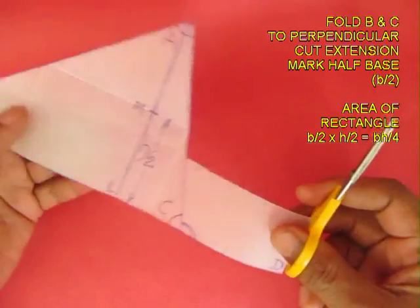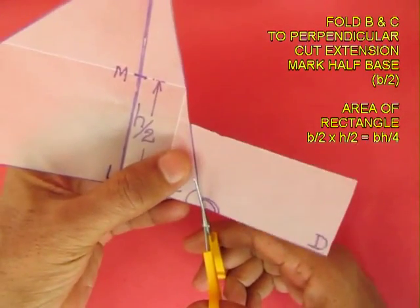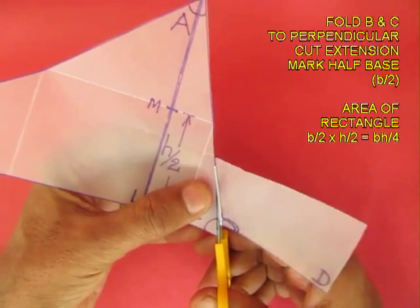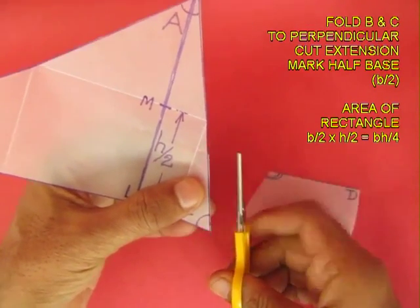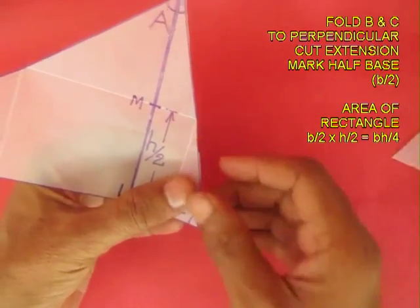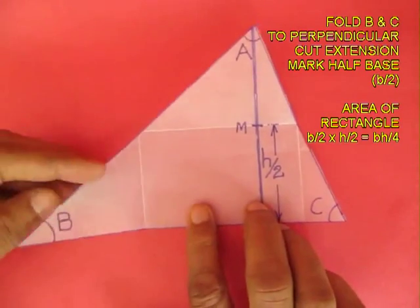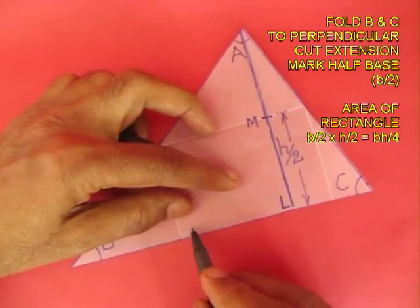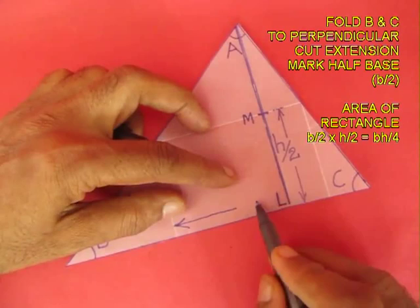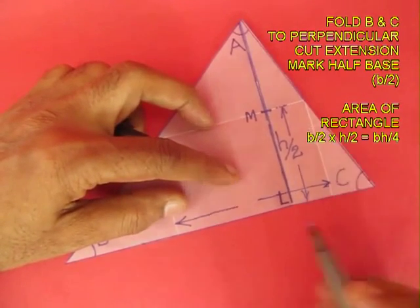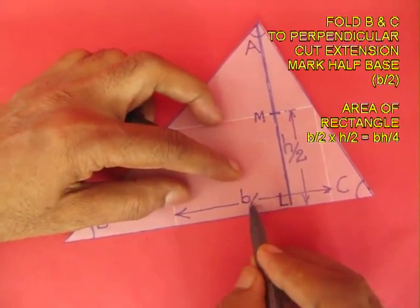Now cut out the extension because we will not need the extension in this activity. Now fold the three angles. Now the base of the rectangle is b by 2.